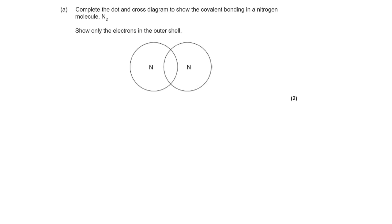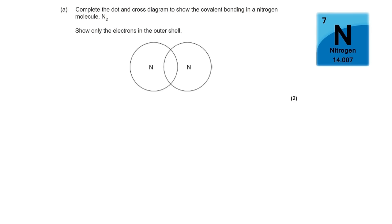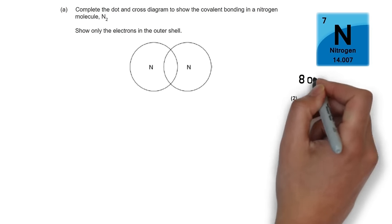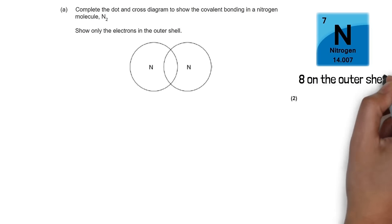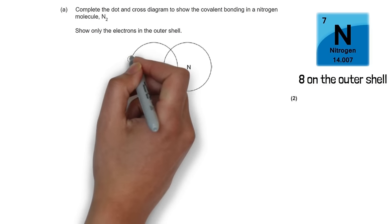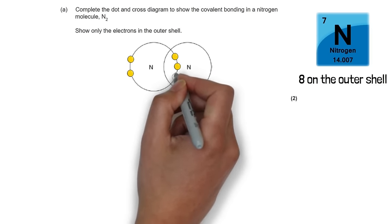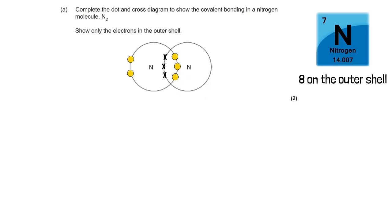The next question asks us to complete the dot and cross diagram to show covalent bonding in a nitrogen molecule. Nitrogen has an atomic mass of 14 and atomic number of 7, so it has 7 protons. It is in group 5, meaning it has 5 electrons on the outer shell. To fill the outer shell it needs 8 electrons, so nitrogen needs 3 more. On the diagram, we show each nitrogen atom sharing 3 electrons.